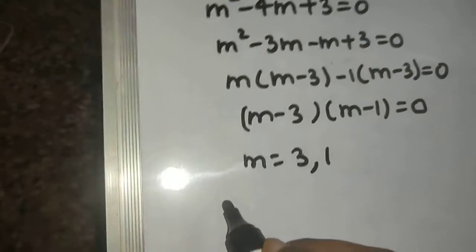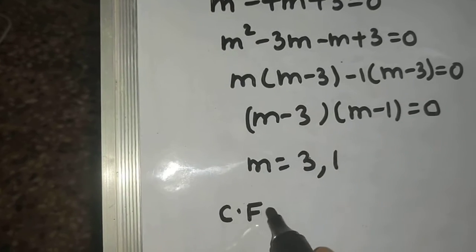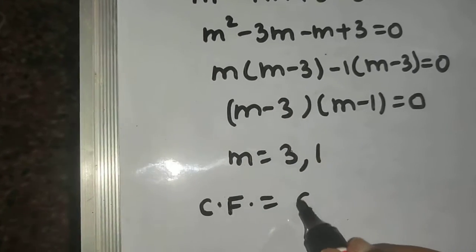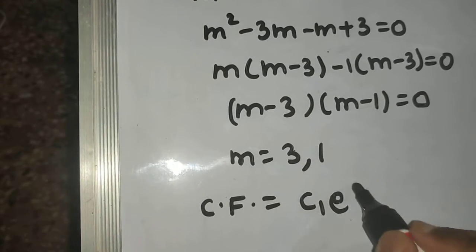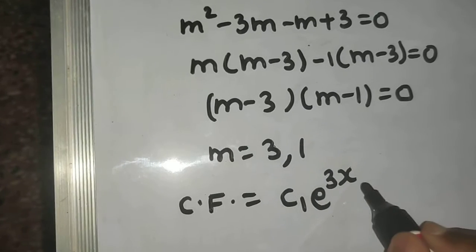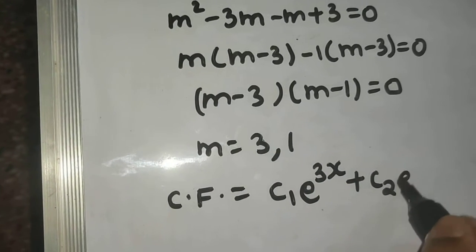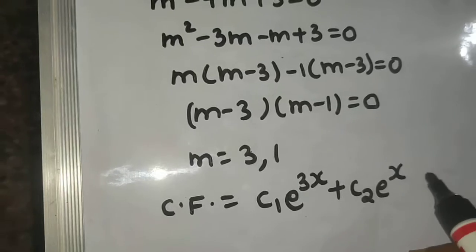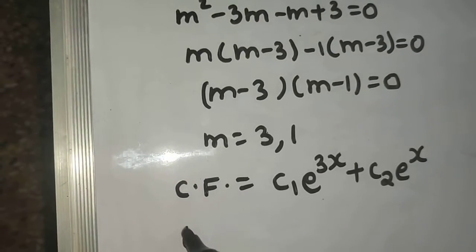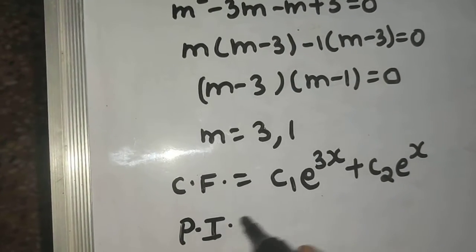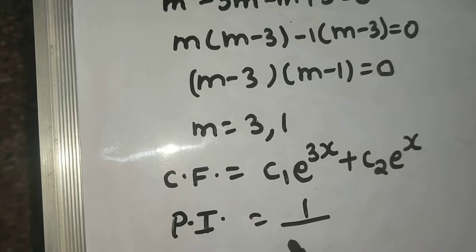So you are getting m equals 3 and 1 as your roots. You can easily write the complementary function as c1 e power first root times x plus c2 e power second root times x.